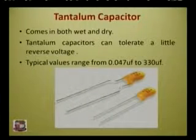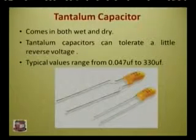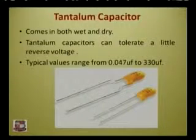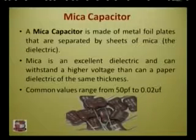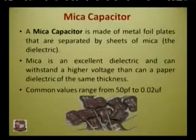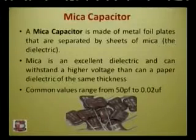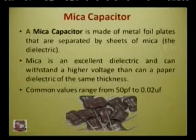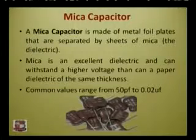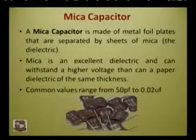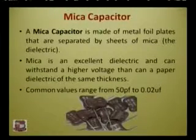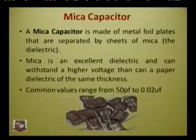Next is the tantalum capacitor — comes in both wet and dry types. Tantalum capacitors can tolerate a little reverse voltage, and their value ranges from 0.04 microfarad to 330 microfarad. Next is the mica capacitor, made of metal foil plates separated by sheets of mica as the dielectric. Mica is an excellent dielectric and can withstand a higher voltage than paper dielectric of the same thickness. Common values range from 50 picofarad to about 0.02 microfarad.